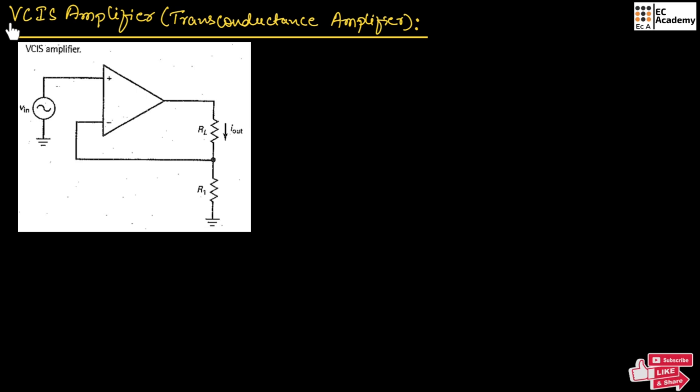VCIS means voltage controlled current source amplifier. In this amplifier, input is voltage and output is current. The input voltage controls the output current.